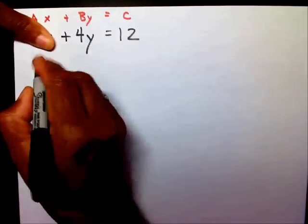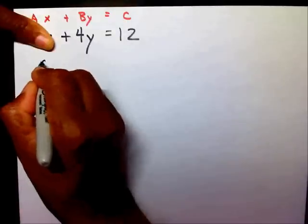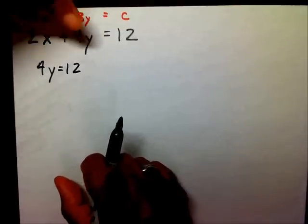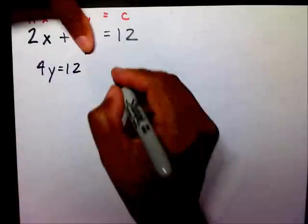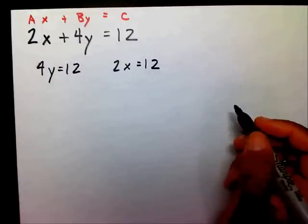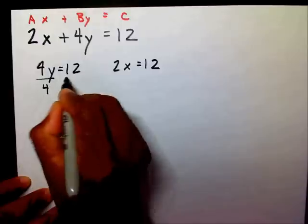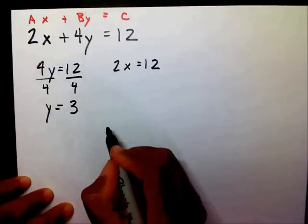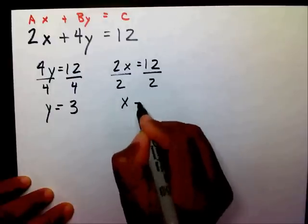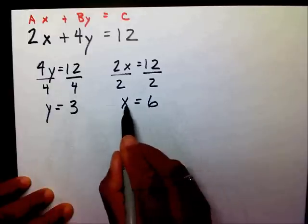Covering up the 2x leaves me with 4y equals 12. If I cover up my y term, that equation is going to be 2x equals 12. Now I'm going to solve both equations. Dividing both sides by 4 gives y equals 3. Solving for x gives x equals 6. So my y-intercept is 3 and my x-intercept is 6.